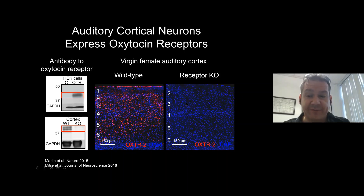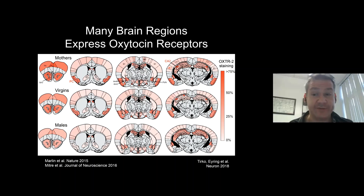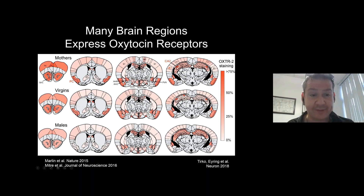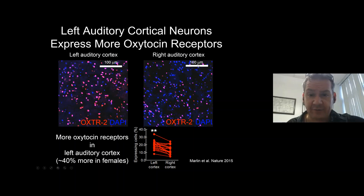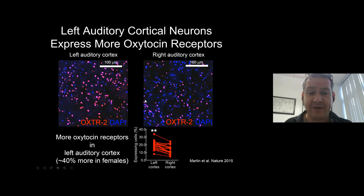We then characterized receptor expression throughout the brain. There are interesting differences in patterns of receptor expression between males and females, and sometimes between mothers and non-mothers. One unusual hot spot was in female left auditory cortex. Here's tissue from the left and right auditory cortex of the same virgin female — about 40% more cells express oxytocin receptors on the left side than on the right side: about 20% on the left cortex, about 10% in right auditory cortex.